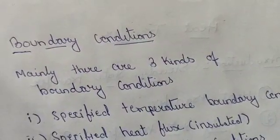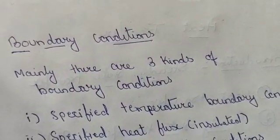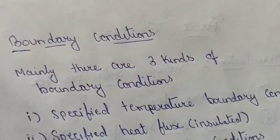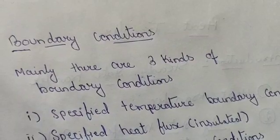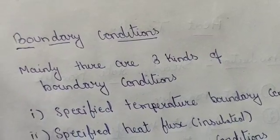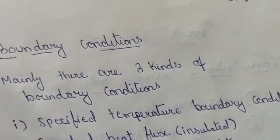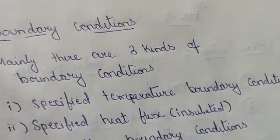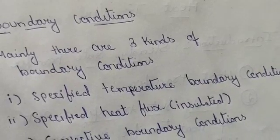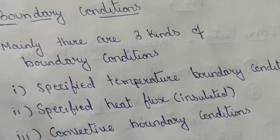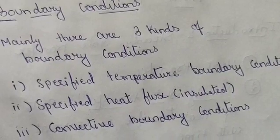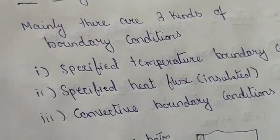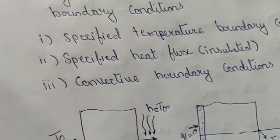In this video we are going to study about boundary conditions. There are mainly three kinds of boundary conditions: first, temperature specified boundary conditions; second, specified heat flux, also called insulated boundary conditions; and third, convective boundary conditions.